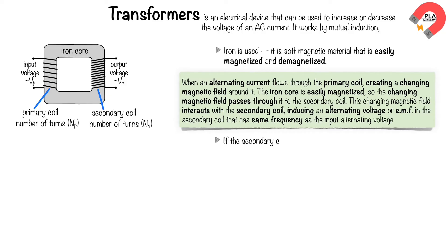If the secondary coil is part of a complete circuit, it will cause an alternating current to flow. Transformers will not work with DC, because DC creates a steady magnetic field that does not interact with the coil and induce an EMF.